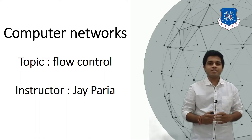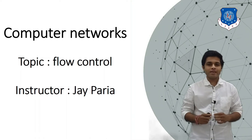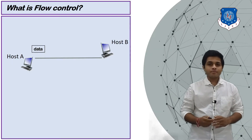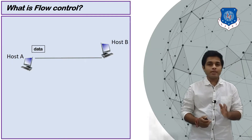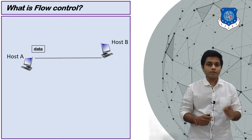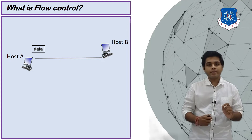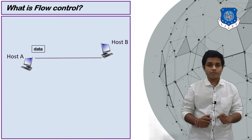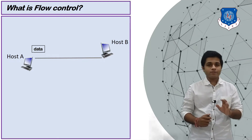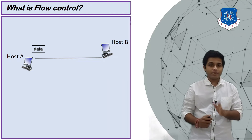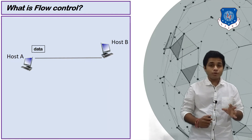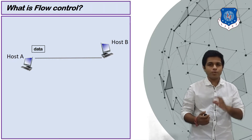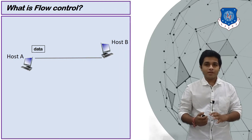Hi everyone, this is Jay, your instructor for computer networks. In today's session we will discuss flow control. Two devices A and B are connected via a link. Suppose A is sending data at 10 Mbps and B is receiving data at only 2 Mbps. You can clearly understand that the rate of sending data of A is very high compared to the receiving rate of B, so most of the data sent by A will be lost at receiver B.